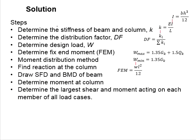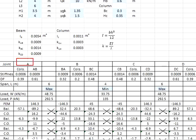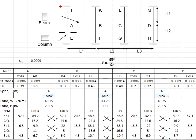After determining the stiffness of the members, you need to deal with the distribution factors. The equation for distribution factors is the stiffness of the member divided by the stiffness of all members at the joint. Taking joint A as an example, there is a column and a beam. Using the stiffness of the beam divided by the total stiffness gives 0.61, and for the column it gives 0.39.